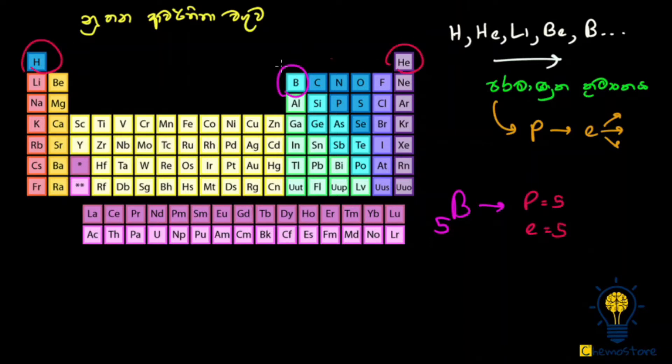Hydrogen, helium, lithium-3, carbon-nitrogen, oxygen, carbon-4, carbon-3, carbon. We can see the boron of the particles on each other. We can see it in the water, not in the water.